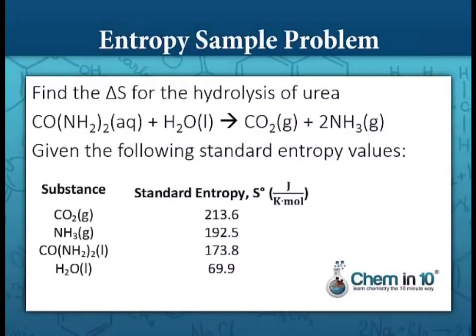Let's look at this sample problem: find the change in entropy, delta S, for the hydrolysis of urea, given the equation and the following entropy values. Since we have the standard entropies of each of these compounds, we can use them by taking the entropies of the products minus the entropies of the reactants.